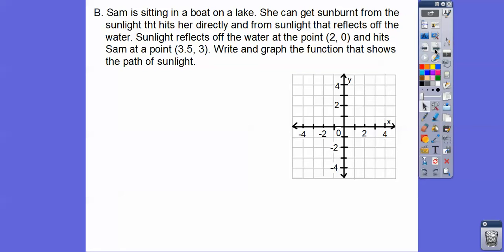All right, Sam is sitting in a boat on a lake. Do you remember this problem? This came out of one of your homework assignments. She can get sunburned from the sunlight that hits her directly from the sunlight that reflects off the water. So sunlight reflects off the water at a point at 2,0, so we'll plot a point right there, and hit Sam at a point at 3.5,3. So 3.5,3. We'll plot a point right there. So we're going to write and graph a function that shows this path.